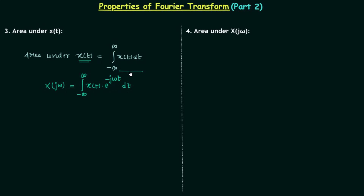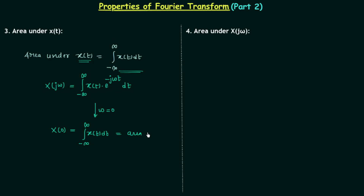We want the form of that integration on the right hand side, so we will make ω equal to zero. This gives us X(0) on the left hand side, and on the right hand side we have the integration from minus infinity to infinity of x(t) dt, since e to the power minus jωt becomes one when ω equals zero. So x(0) is equal to the area under the time domain signal x(t), and this is the property known as area under x(t).